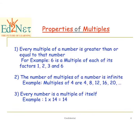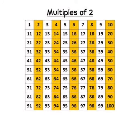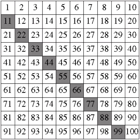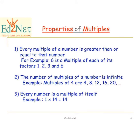The second property says that the number of multiples of a number is infinite. Children, in factors we learnt that any number will have finite or limited factors. But when we talk about multiples, it has unlimited or infinite multiples.